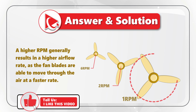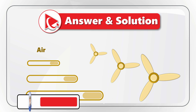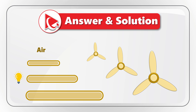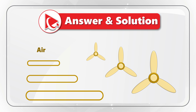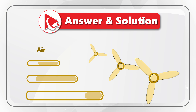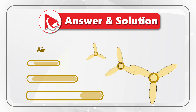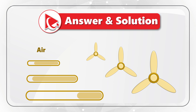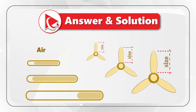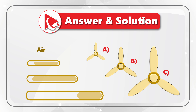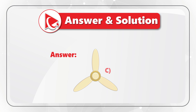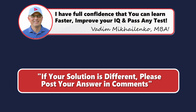A fan with larger blades can capture and move more air per revolution compared to the same fan design with smaller blades. The rotational speed also affects airflow — higher RPM generally results in a higher airflow rate. As you can see, fans A, B, and C all have the same design. Given that the three fans have the same design but different sizes, the fan with the largest size will throw more air compared to the smaller fans. This is why the correct answer is Fan C.